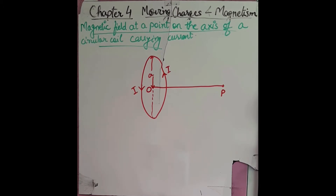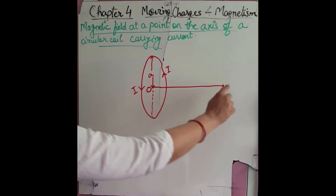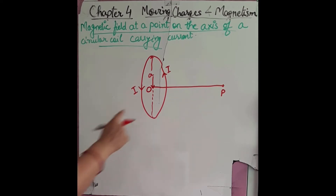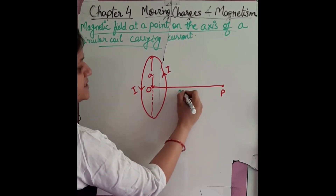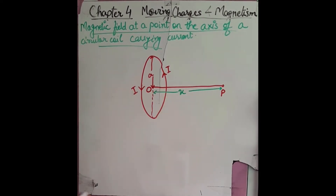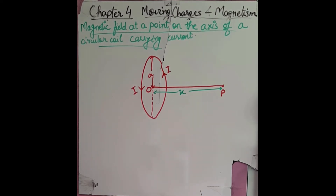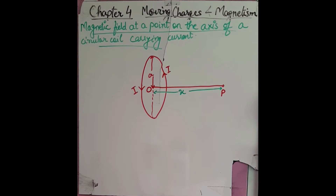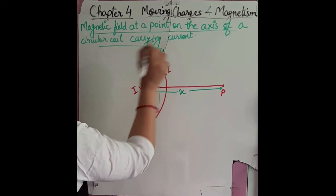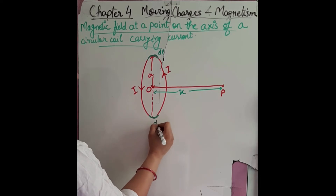Point P is on the axis of this circular coil, at a distance X from the center of this coil. Now, I am considering small elements of length dl on this coil — two diametrically opposite small elements of length dl.